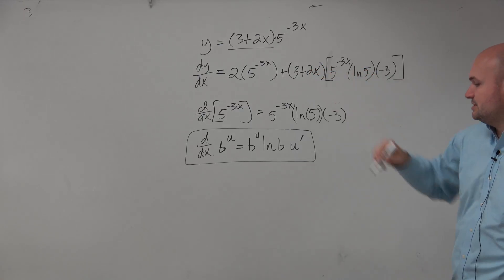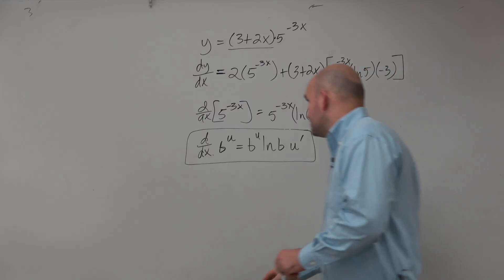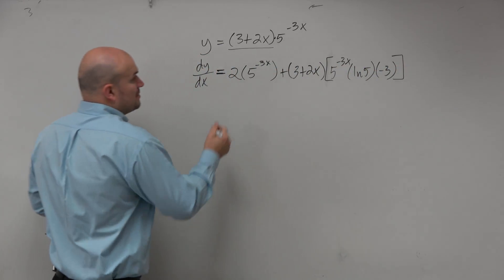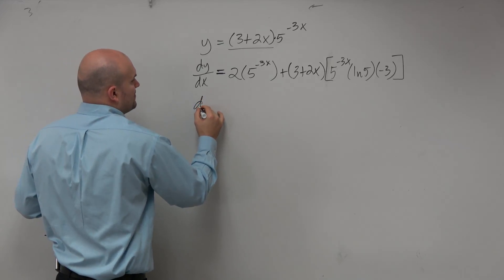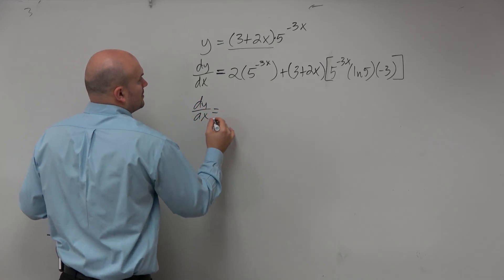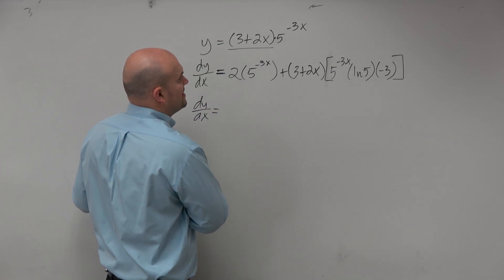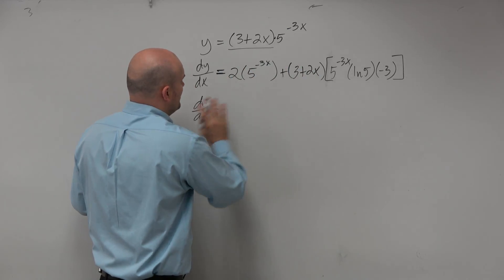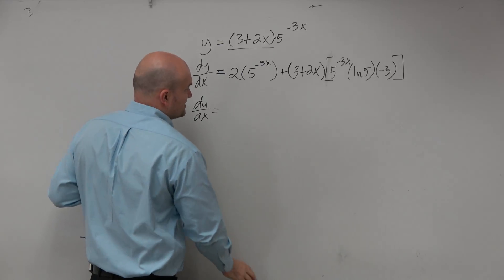And then you could see on both of these terms, if we wanted to simplify, possibly what we could do is we could simplify out a 5 minus 3 to the x. We'd have to distribute that, so that's probably not going to be as pretty.